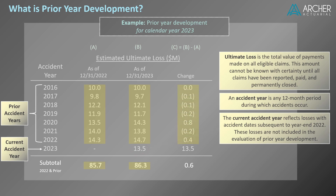Column C presents the change in estimates of ultimate loss between year-end 2022 and year-end 2023. Excluding amounts related to the current accident year, the change for accident years 2022 and prior equals $600,000. This amount represents the prior year development for calendar year 2023 in our example. To recap: the calendar year 2023 prior year development of $600,000 results from the change in estimates of ultimate loss between the end of 2022 and the end of 2023, excluding the current accident year 2023.